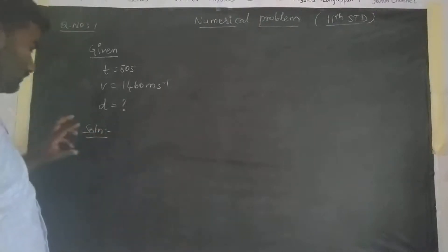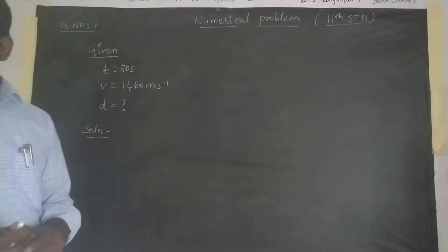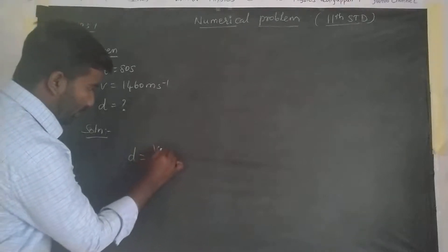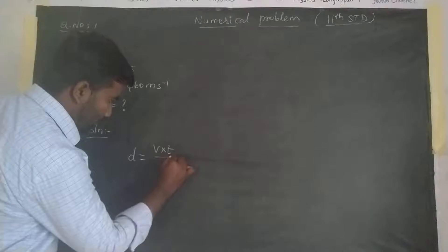Now, the distance is calculated using the formula: d is equal to v into t divided by 2.